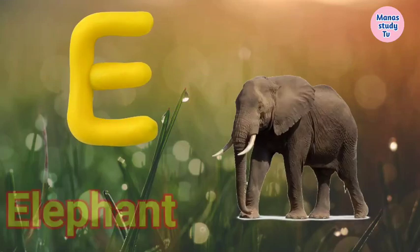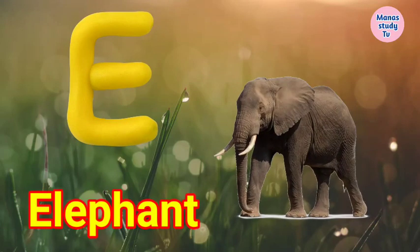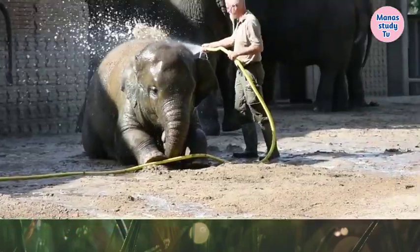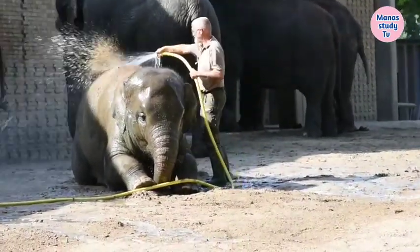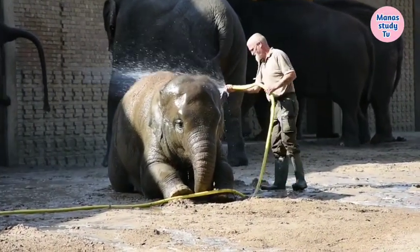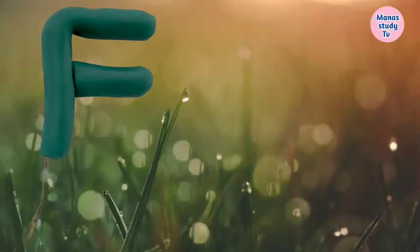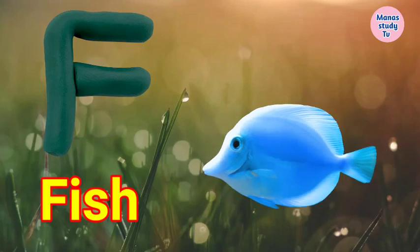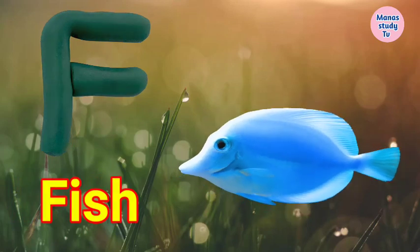E for Elephant. Elephant means Hathi. F for Fish. Fish means Machli.